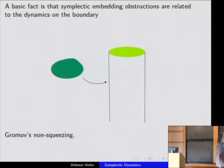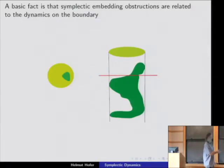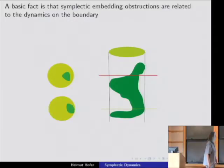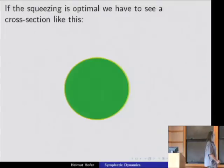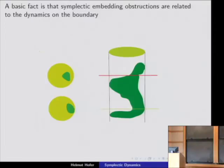Assume there is an optimal way to squeeze. Take the infimum of all cylinders where the domain fits in, and assume it actually fits in. Here we have this thing embedded — we take cross-sections in the R^{2N−2} direction. I claim there has to be a cross-section where the picture is completely filled. Because I optimally squeezed it — and here's the proof.